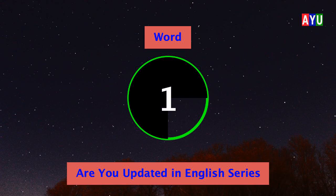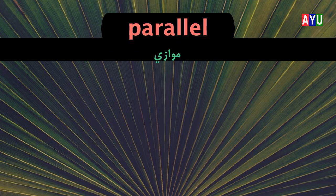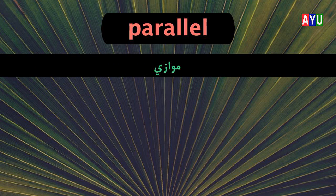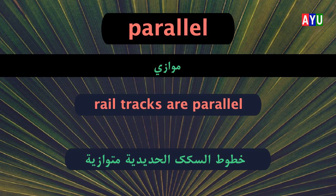First word: Parallel. Parallel means مُوَازٍ (Mwaza). Let's see one example. Rail tracks are parallel. خُطُوطُ السِّكَكِ الحَدِيدِيَّةِ مُتَوَازِيَةٌ.